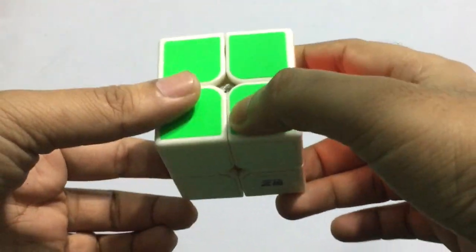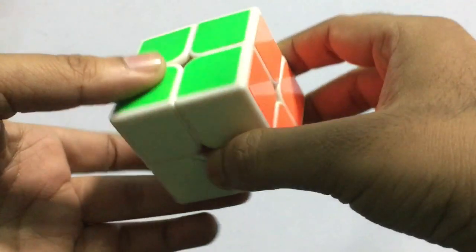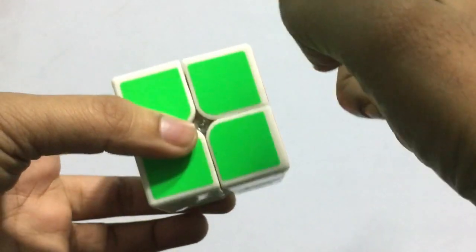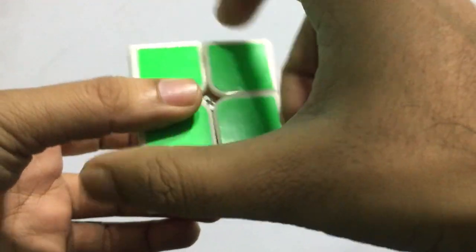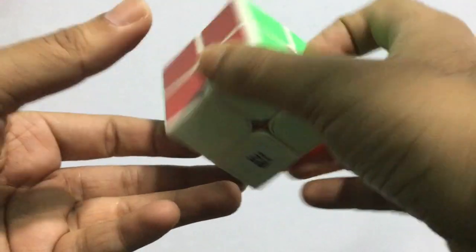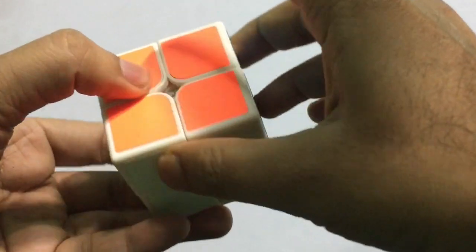This is a 2x2 Rubik's Cube. It has 6 surfaces: white, yellow, green, blue, red, and orange.